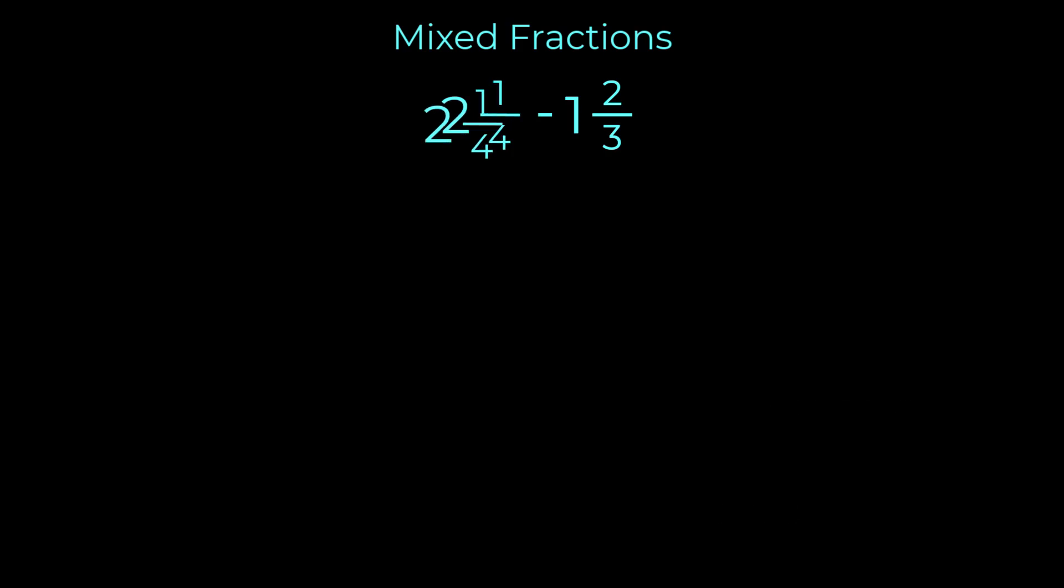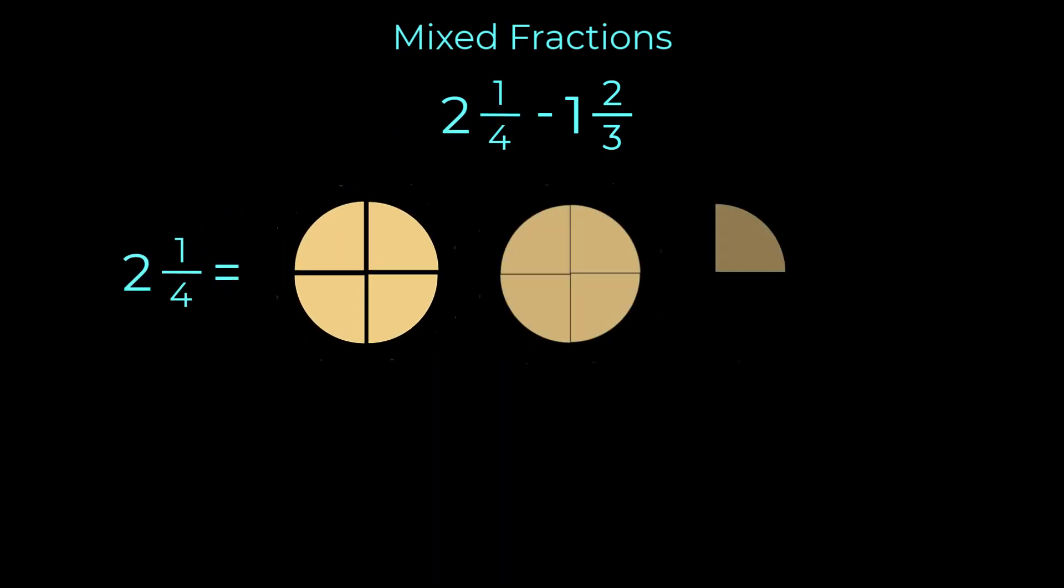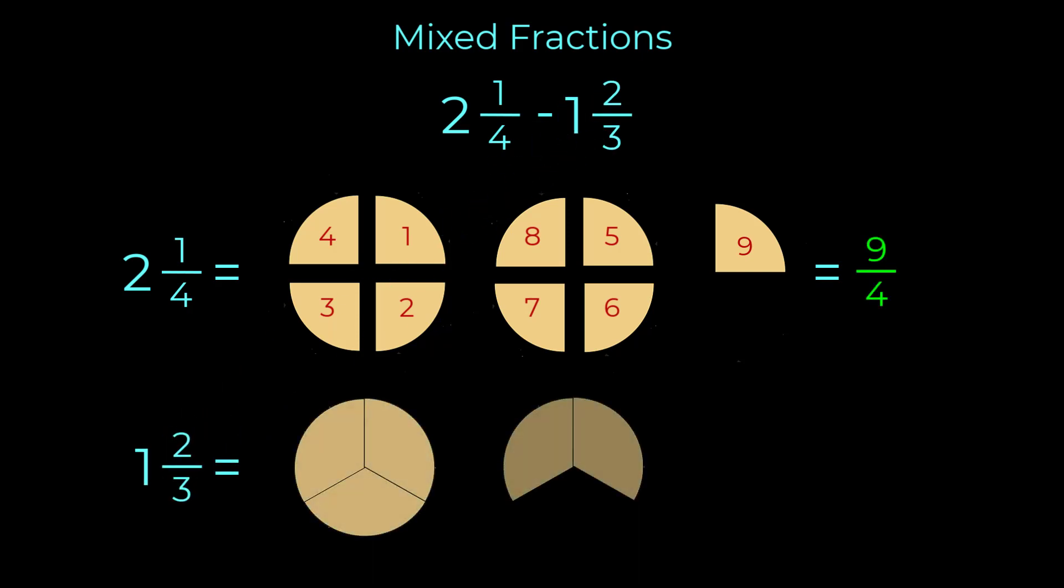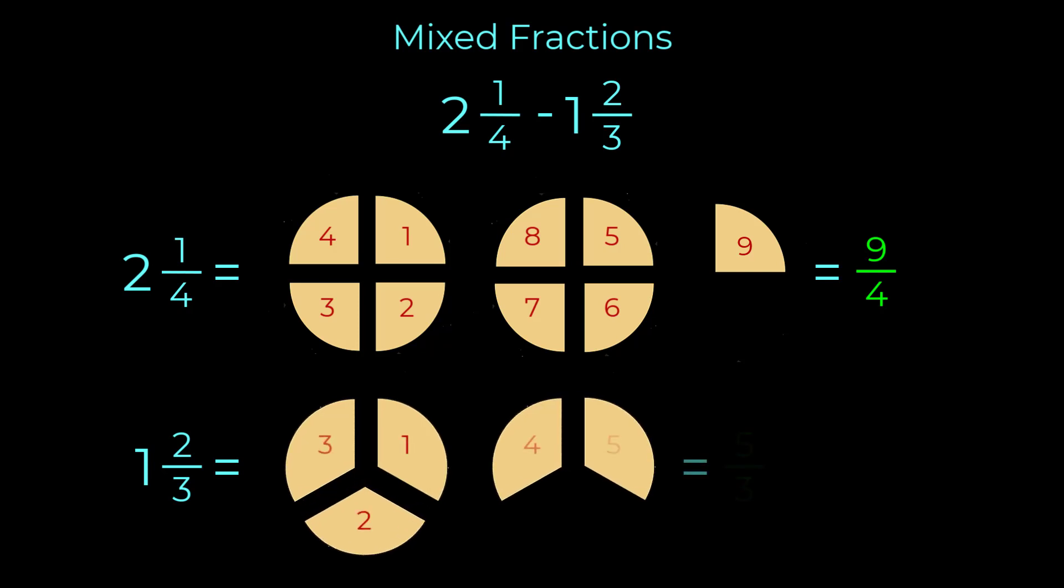So the mixed fraction of two and one fourth is equivalent to the improper fraction nine over four. The mixed fraction of one and two thirds is equivalent to the improper fraction five over three.